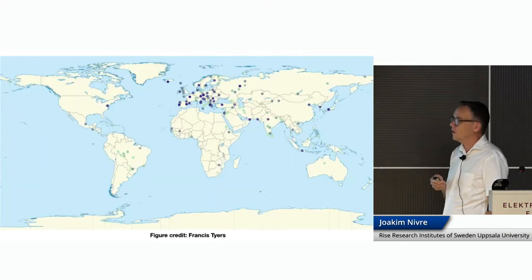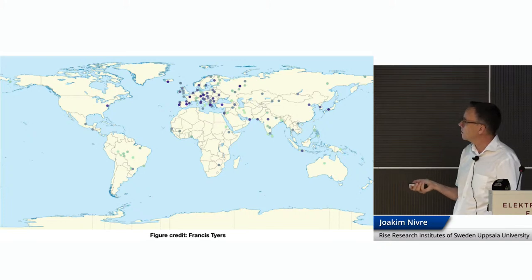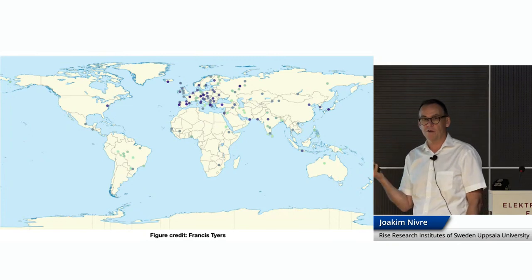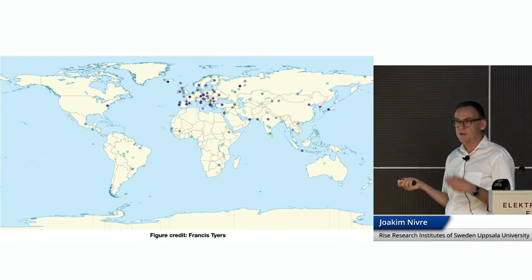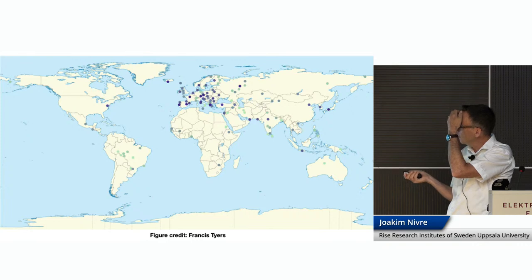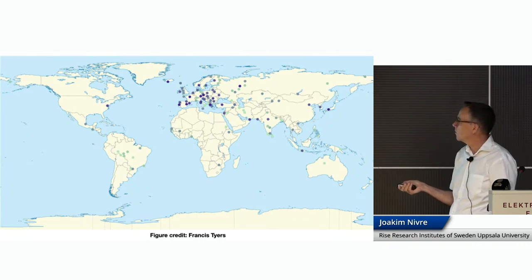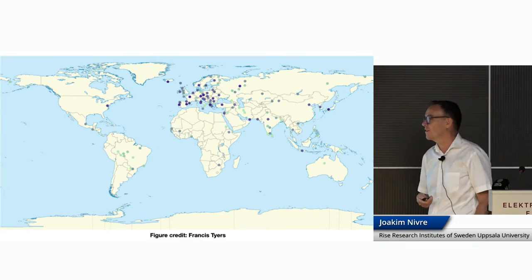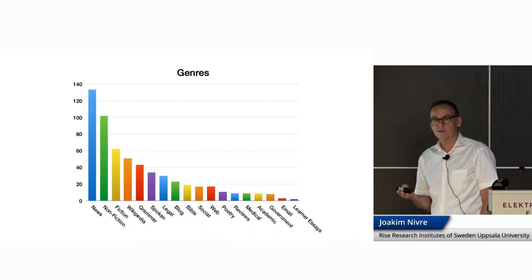Here is another way of visualizing this problem, thanks to Frank Tiers: every dot is a language, positioned approximately where that language is spoken on the map. The color of the dot signifies the amount of data available — dark blue being large, light green being small. We see a very strong European bias: not only are there more dots in that area, but also most of the darker dots. Turkish is relatively okay compared to many others here.